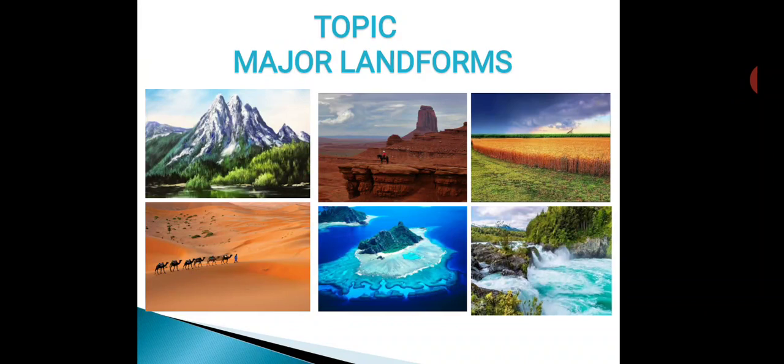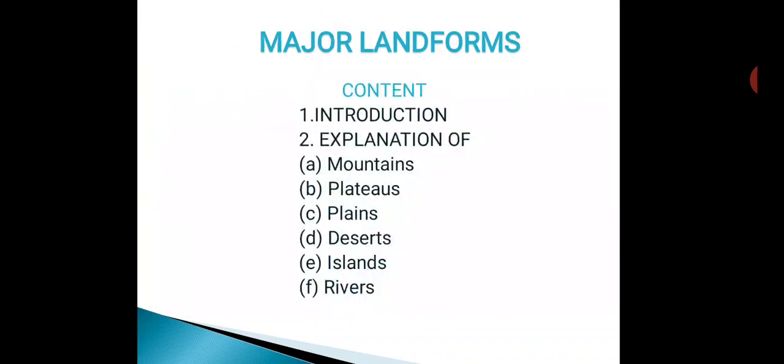So landforms actually, landforms are different types of land on the earth. It means that the earth's surface is not uniform. In this chapter we will discuss major landforms.